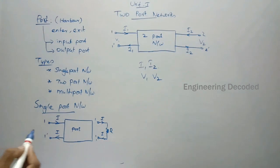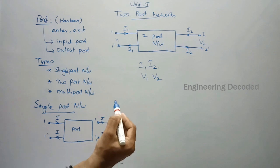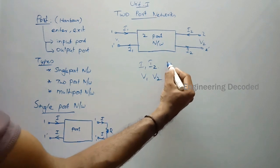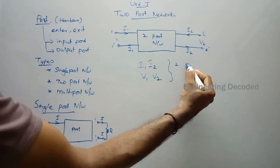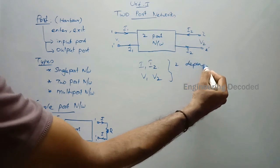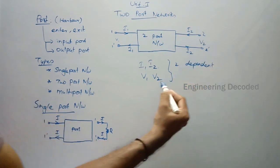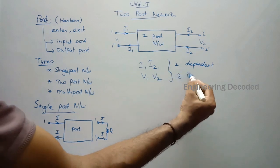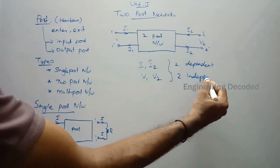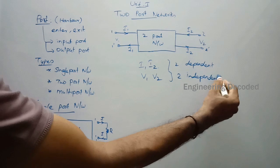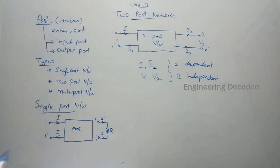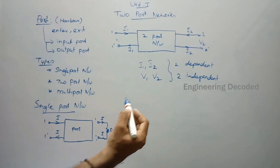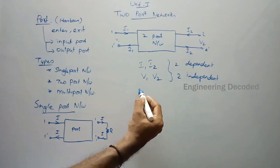Out of these four parameters, you can keep any two parameters as dependent parameters and you can keep any other two parameters as independent parameters, and we can analyze a two-port network. For the analysis of a two-port network, we have four methods.